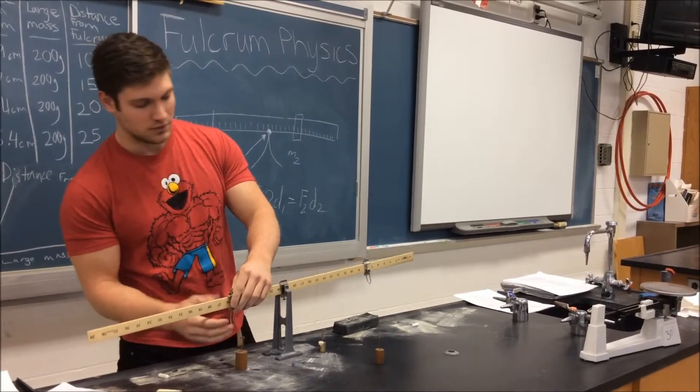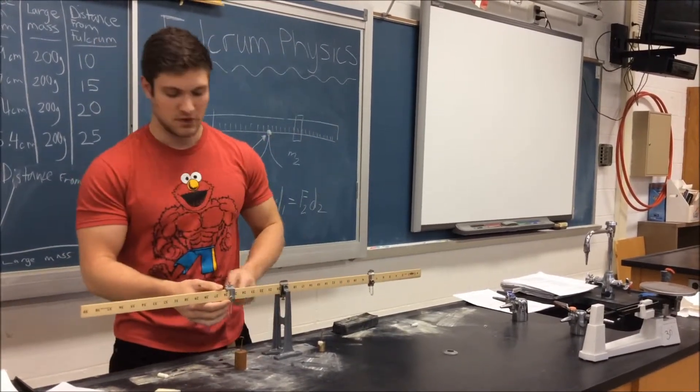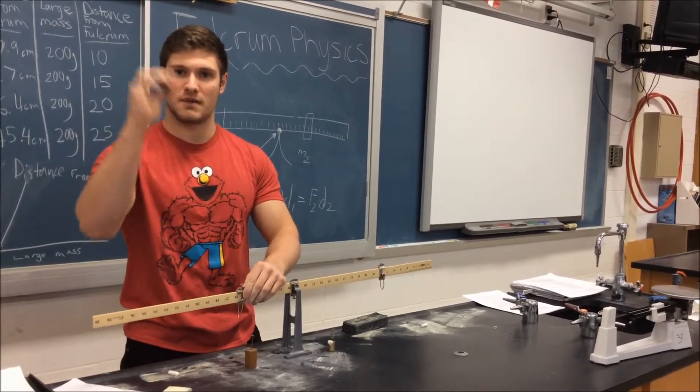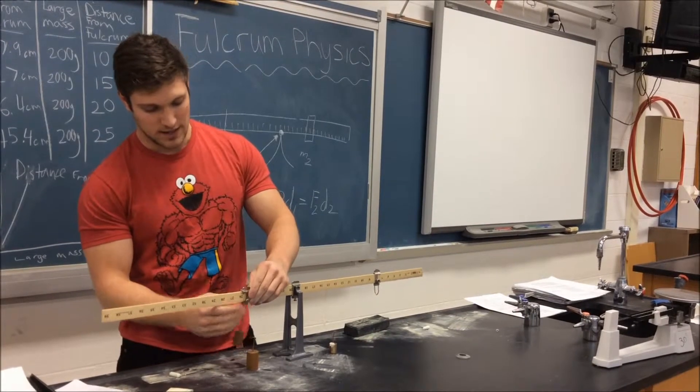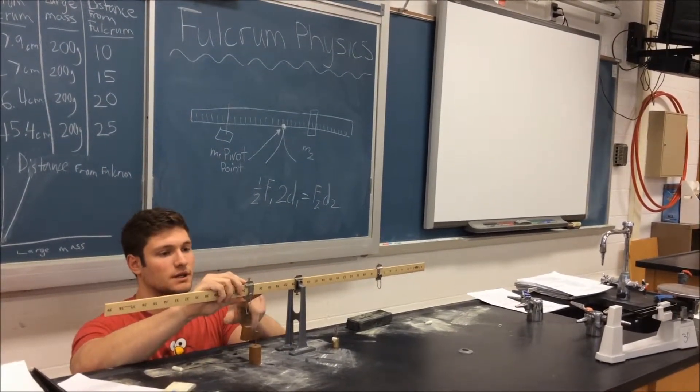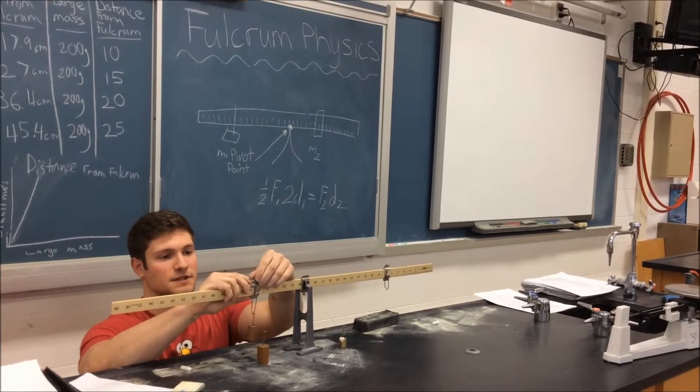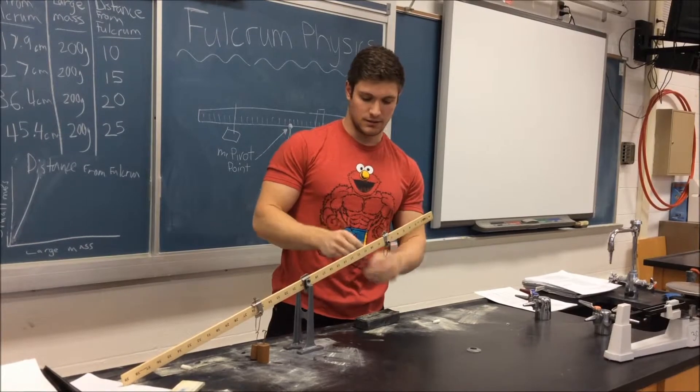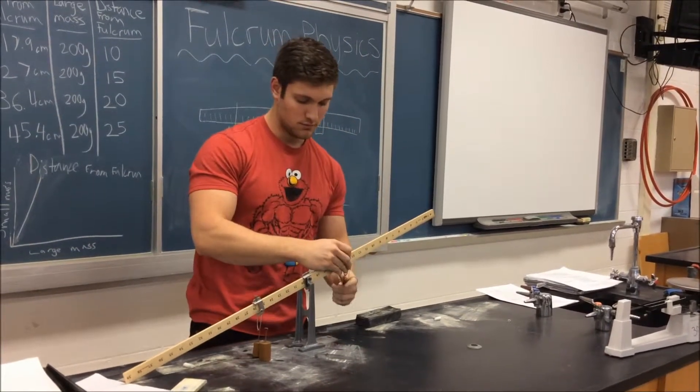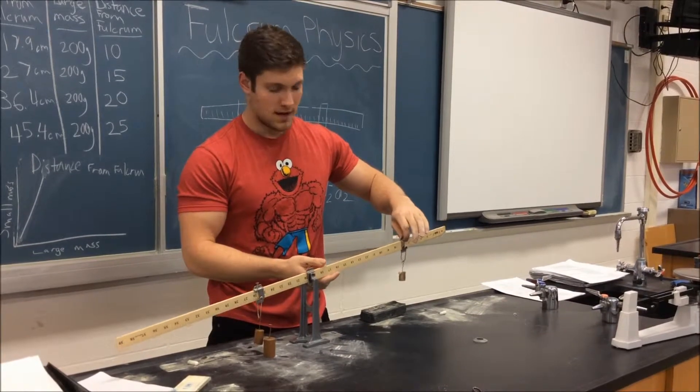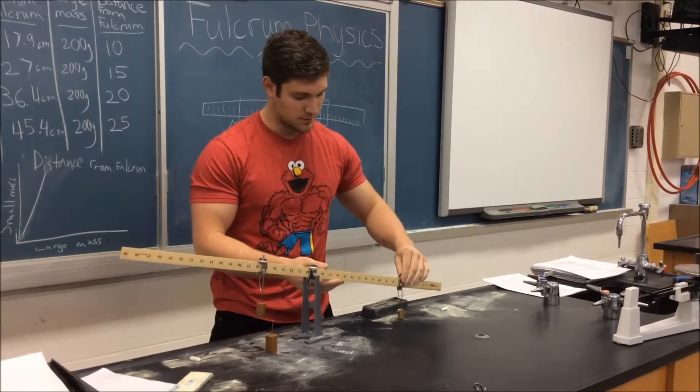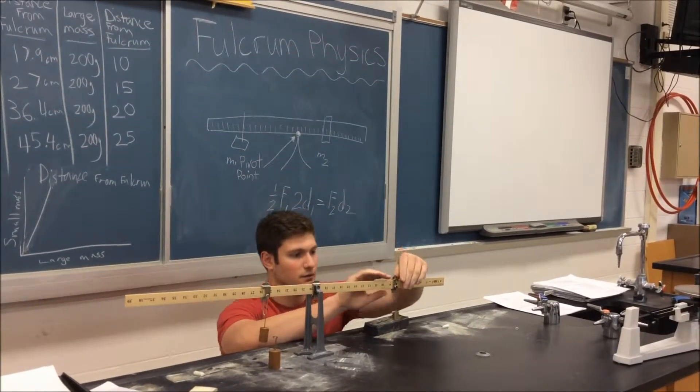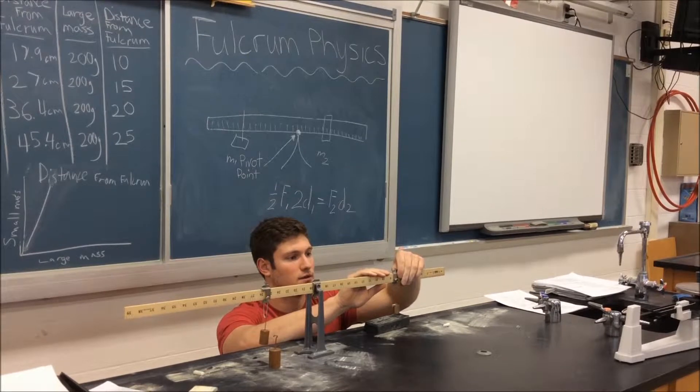Right now we know we have a 100-gram mass. We see it is 15 centimeters away from the fulcrum. Then we take our unknown mass, and we place it out, further out and out until we start to achieve equilibrium. This may take a moment to find your balancing point, but with a practice hand, anything is possible.